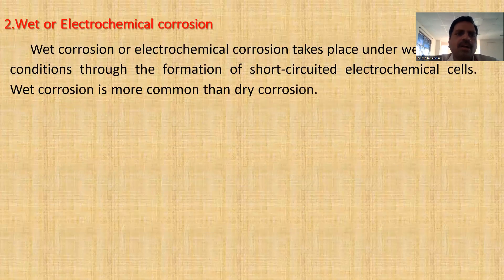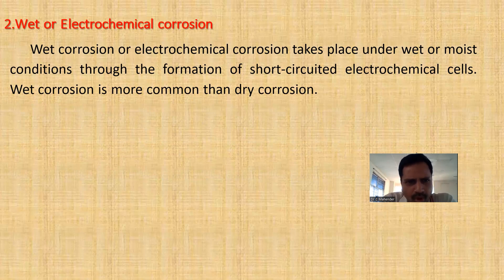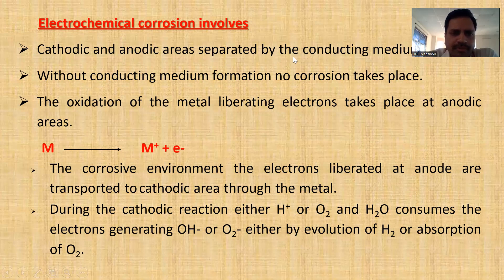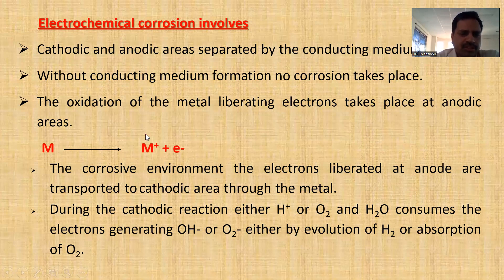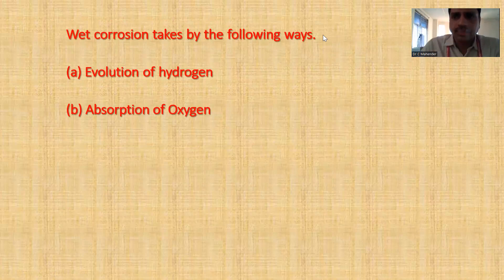Next we'll see wet or electrochemical corrosion. Wet corrosion is electrochemical corrosion and takes place under wet or moisture conditions, through the formation of short-circuited electrochemical cells. Wet corrosion is more common than dry corrosion. Wet corrosion takes place by two ways: evolution of hydrogen and absorption of oxygen.